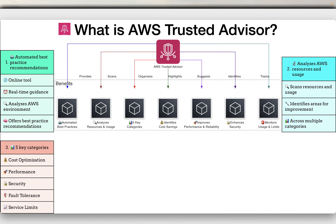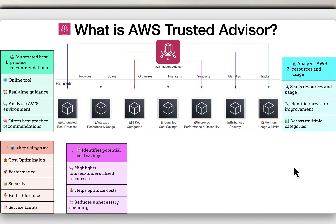The tool organizes its recommendations into five key categories, ensuring a comprehensive analysis of your AWS infrastructure. Those five categories are cost optimization, performance, security, fault tolerance, and service limits. By highlighting unused or underutilized resources, Trusted Advisor helps you optimize cost and reduce unnecessary spending.